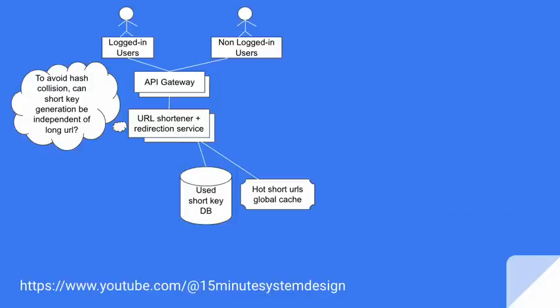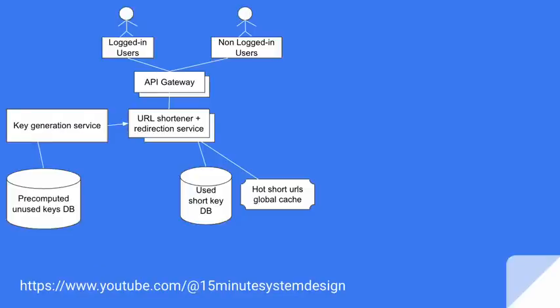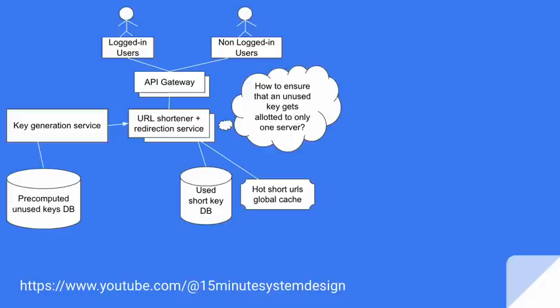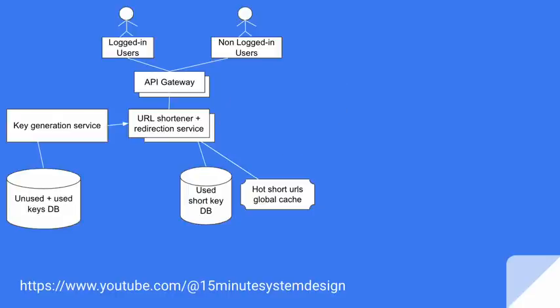How can we avoid hash collision better? Can short key generation be quite independent of the long URL itself? Yes, it can. We can have a Key Generation Service which generates all unused keys offline, pre-computes them, and saves them into the DB. The URL shortener service can always ask for a fresh key from the Key Generation Service. To ensure the same key doesn't get allotted to multiple servers — since the URL shortener and redirection service might have multiple servers — we want no inconsistency in key allotment. This can be done by having two tables in the Key Generation Service: one for unused keys and one for all used keys or keys already allotted to different servers.